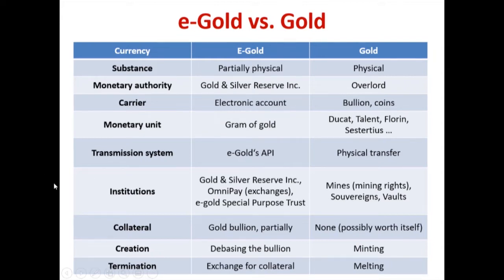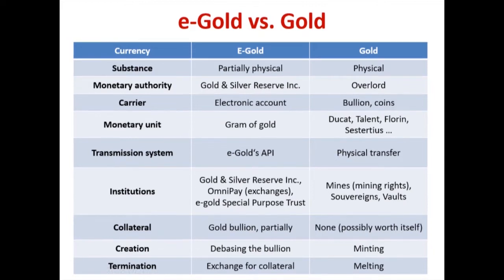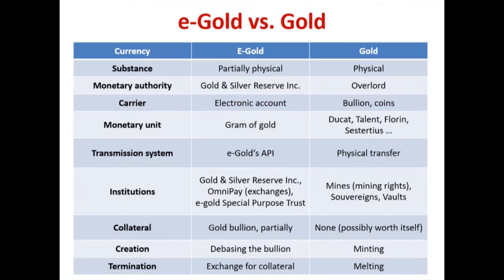E-gold's carrier was an electronic account, and the transmission system was the API. Institutions included the Gold and Silver Reserve Incorporated, an OmniPay system managing exchanges, and the E-gold Special Purpose Trust — a vault holding the gold collateral. Creation was by depositing more gold or debasing the bullion through fractional reserves. Denomination was by exchange for collateral — you could exchange e-gold for actual physical gold.